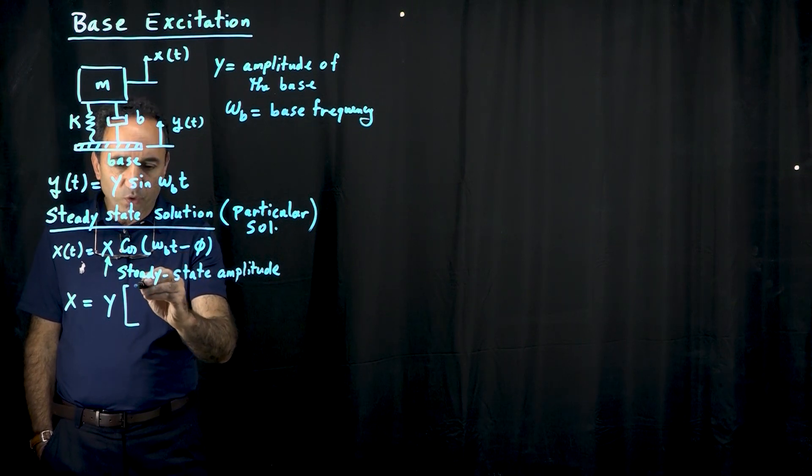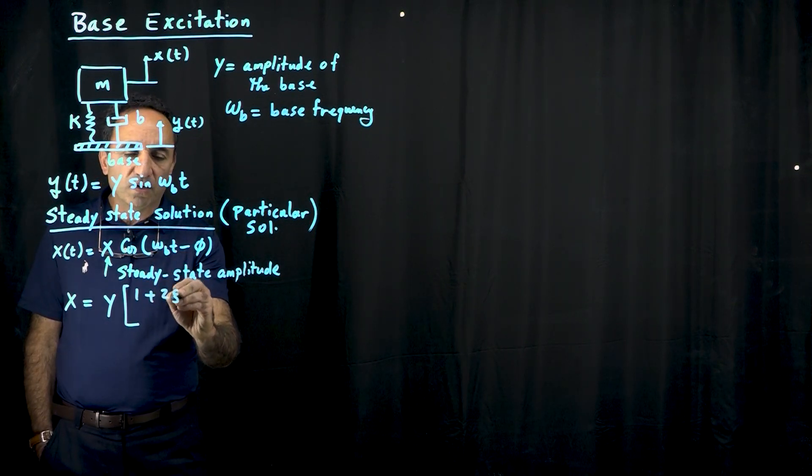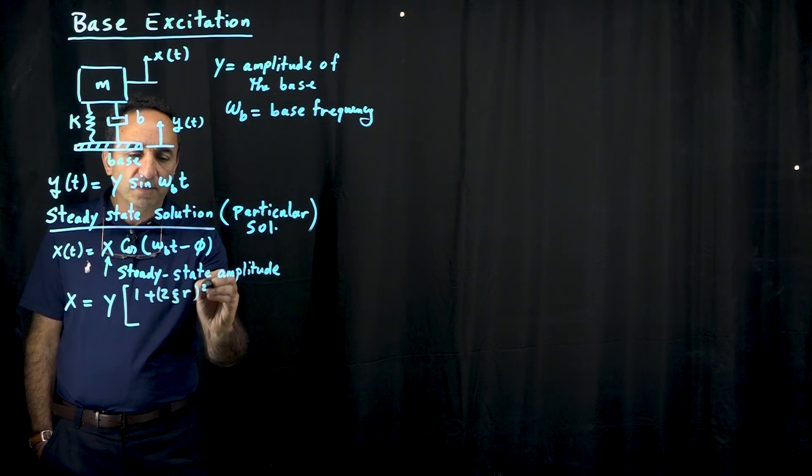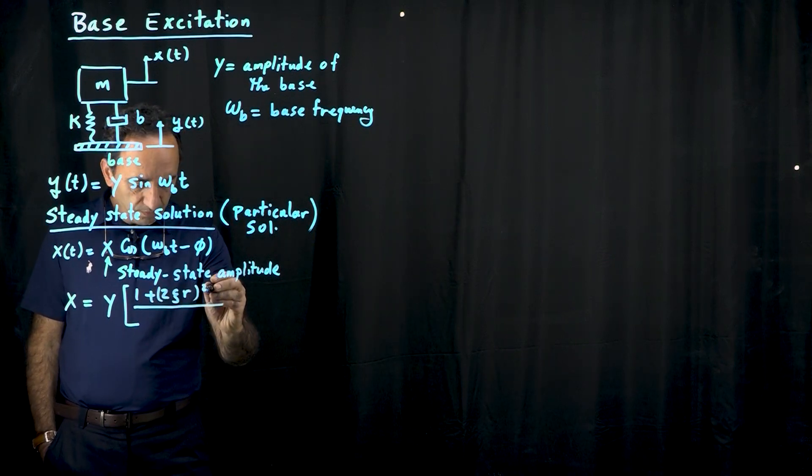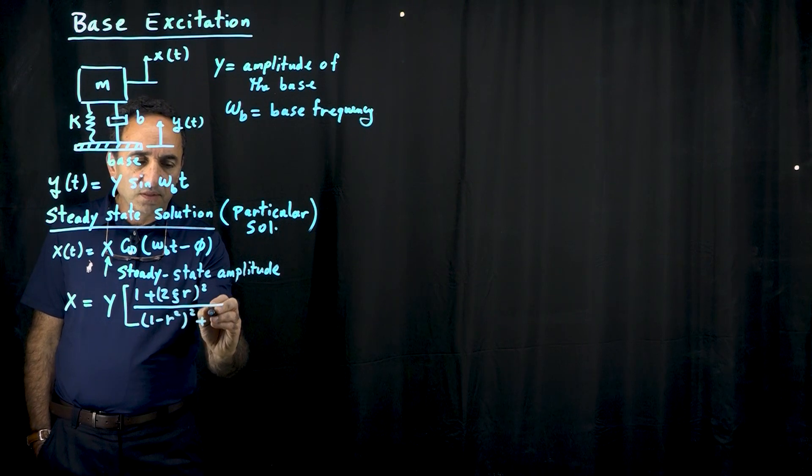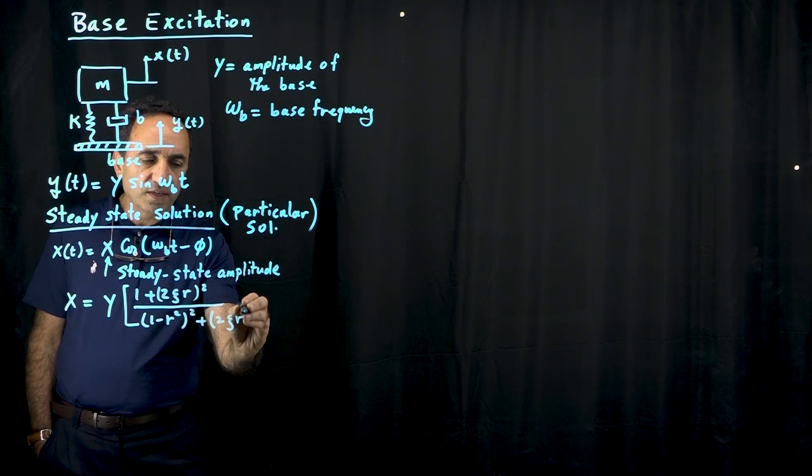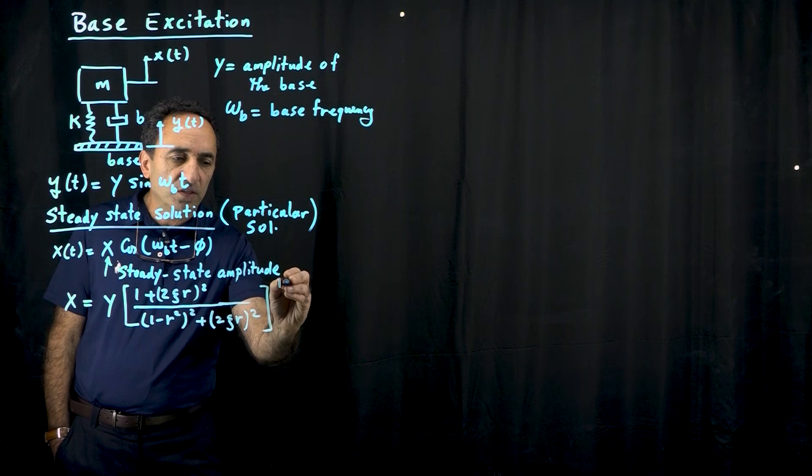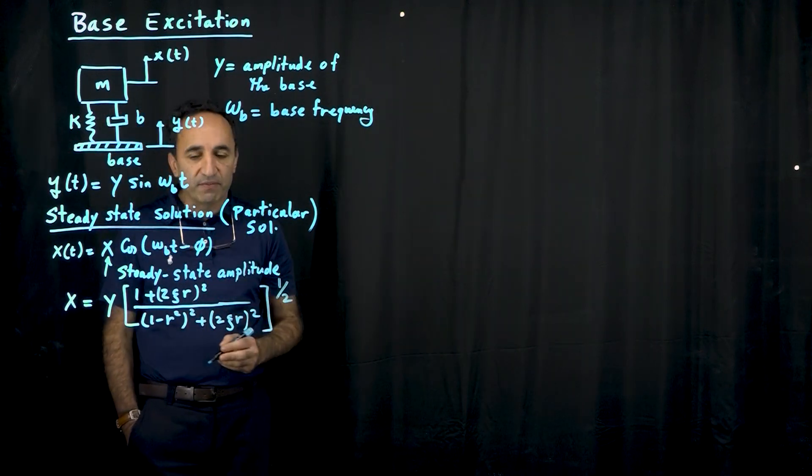which in the numerator we have 1 plus 2 zeta r, the whole thing is squared, divided by 1 minus r squared, and I'll tell you what r is in a minute, plus 2 zeta r again in parentheses squared, but the whole thing is under a radical or raised to power 1 half.